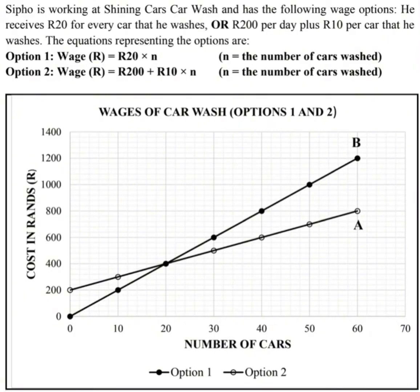The equations representing the options are: Option 1 — wage is equal to 20 rand multiplied by N, where N represents the number of cars. Option 2 — wage is equal to 200 rand plus 10 rand multiplied by the number of cars.